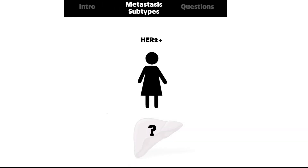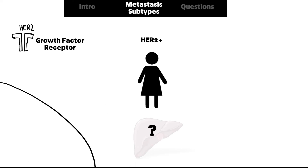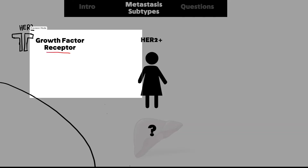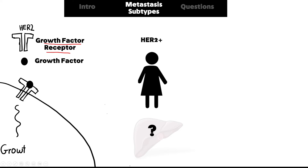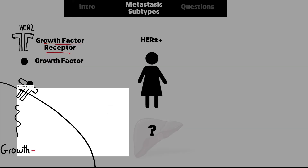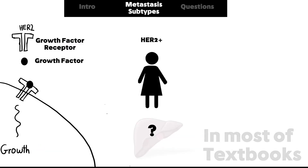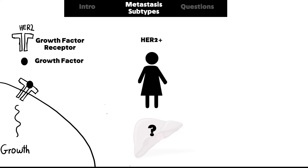You're probably asking yourself: what is HER2 and what is the significance of being positive or negative? Every cell in our body has something called a growth factor receptor. HER2 is a growth factor receptor — it receives growth signals from the environment. When this receptor binds with its ligand, which is the growth factor, it sends signals through the cell to stimulate growth, which is equivalent to cell division and increasing cell numbers.